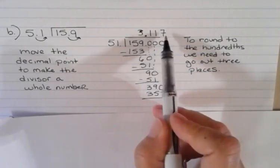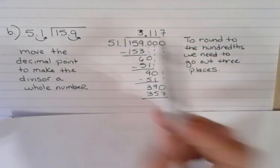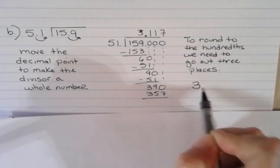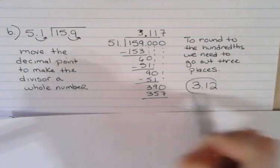I don't really care about the rest of that because I was only asked to round to the hundredths. This is far enough. I went out three places. Now I can round back, and I can see that my answer should be 3 and 12 hundredths when I round it.